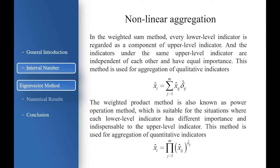Regarding non-linear aggregation: in the weighted-sum method, every lower-level indicator is regarded as a component of the upper-level indicator, and indicators under the same upper-level indicator are independent and have equal importance. This method is used for aggregation of qualitative indicators. The weighted-product method, also known as the power operation method, is suitable for situations where each lower-level indicator has different importance and is indispensable to the upper-level indicator. This method is used for aggregation of quantitative indicators.